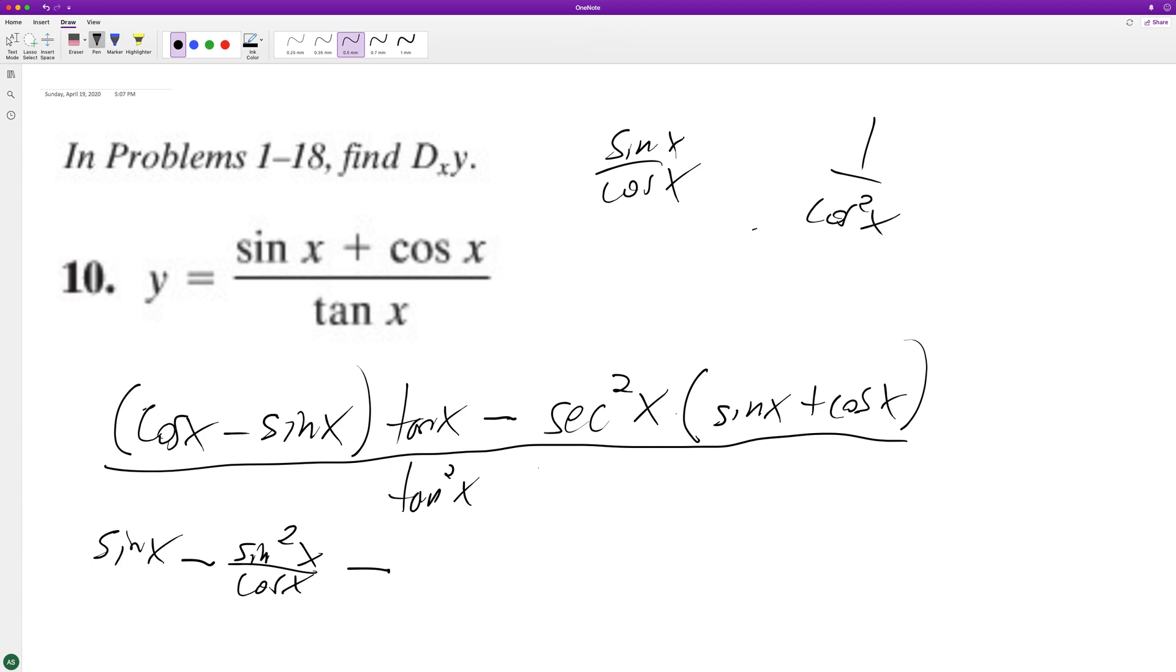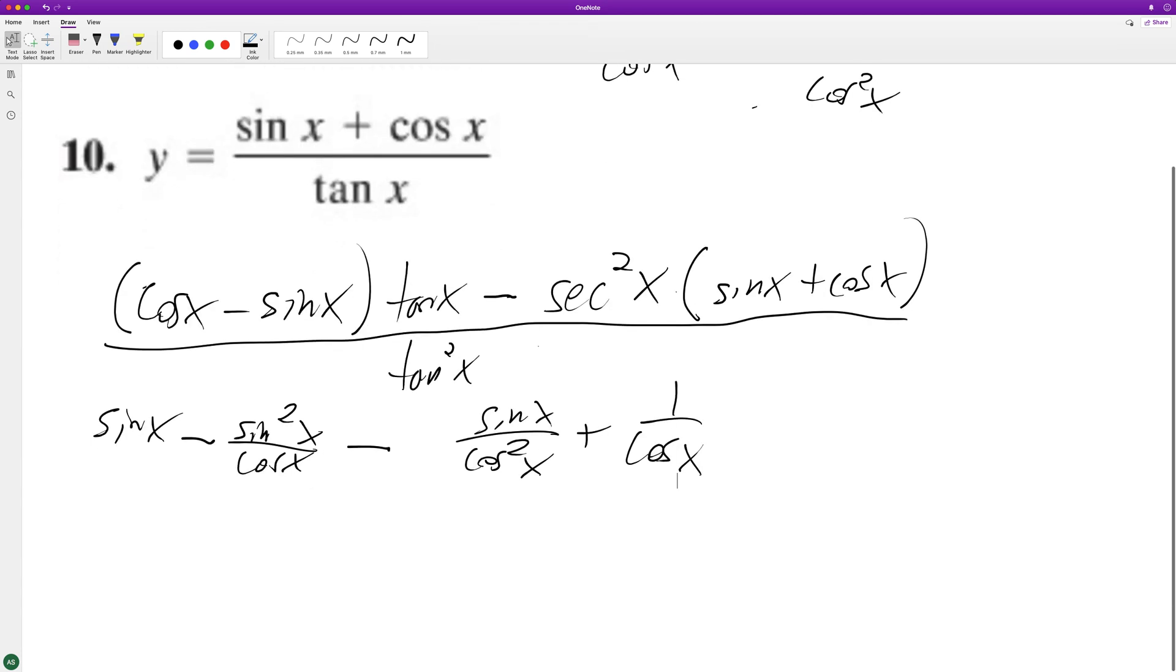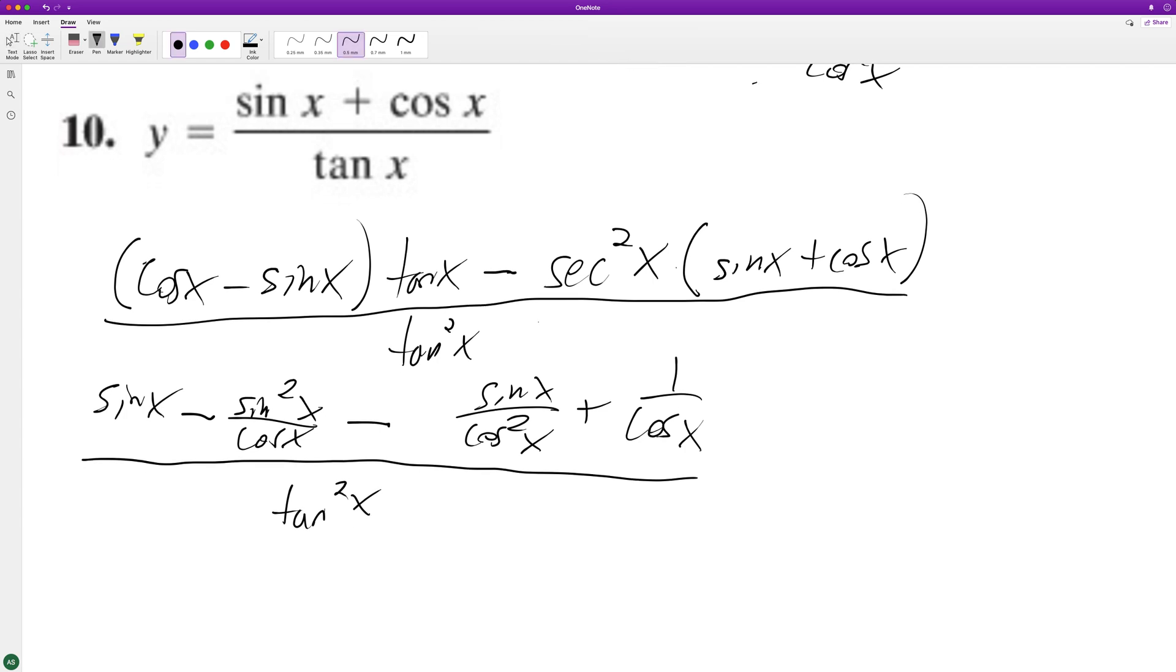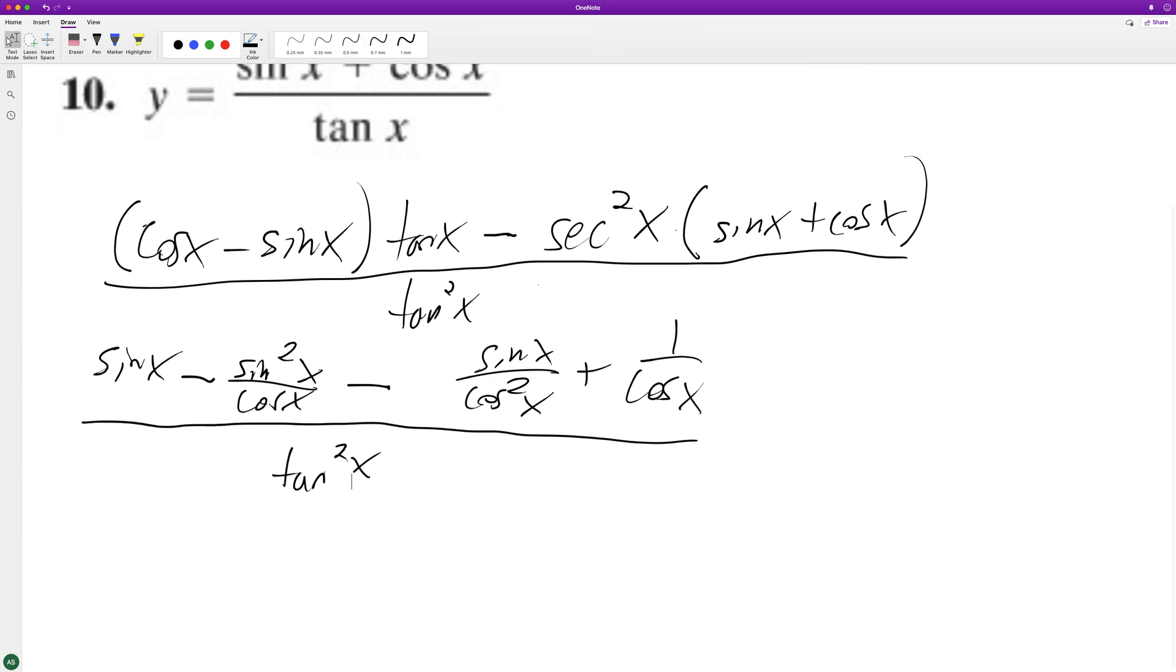So we end up with sine of x over cosine squared of x plus this just becomes 1 over cosine of x because one of the cosines on the top and bottom cancel out, and then we have our tangent squared on the bottom. So what we can do here is we can get a common denominator of cosine squared x potentially.